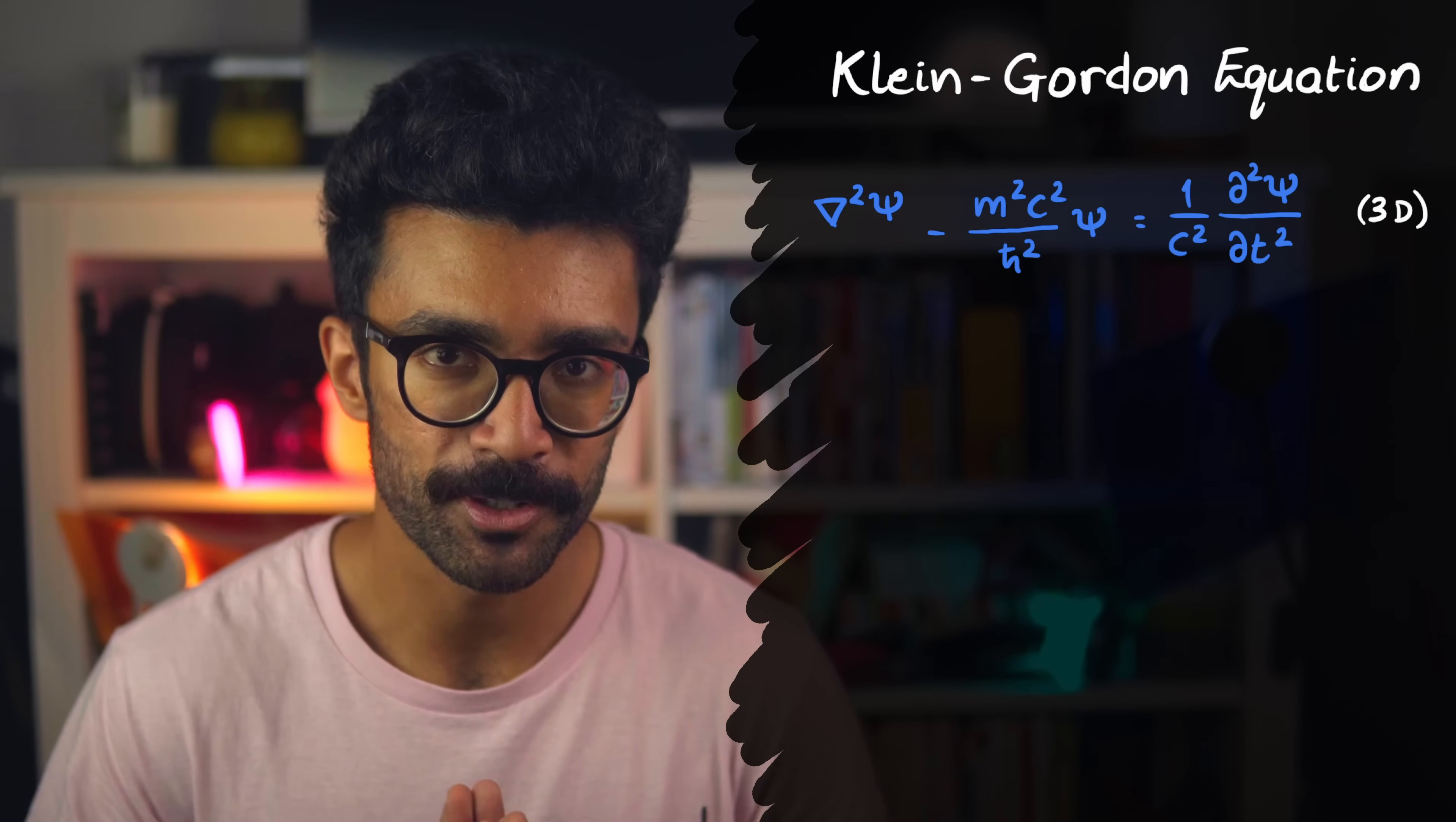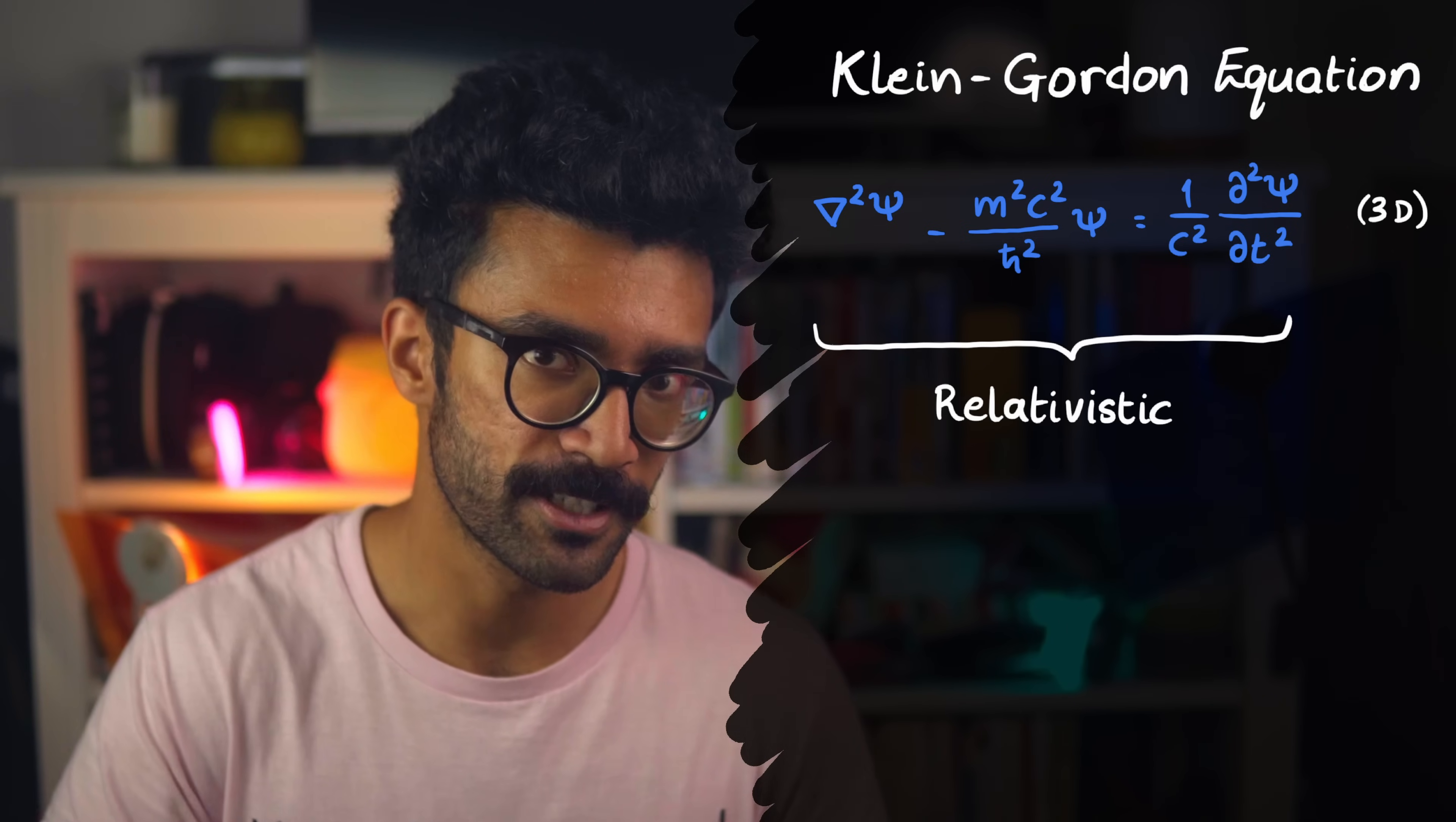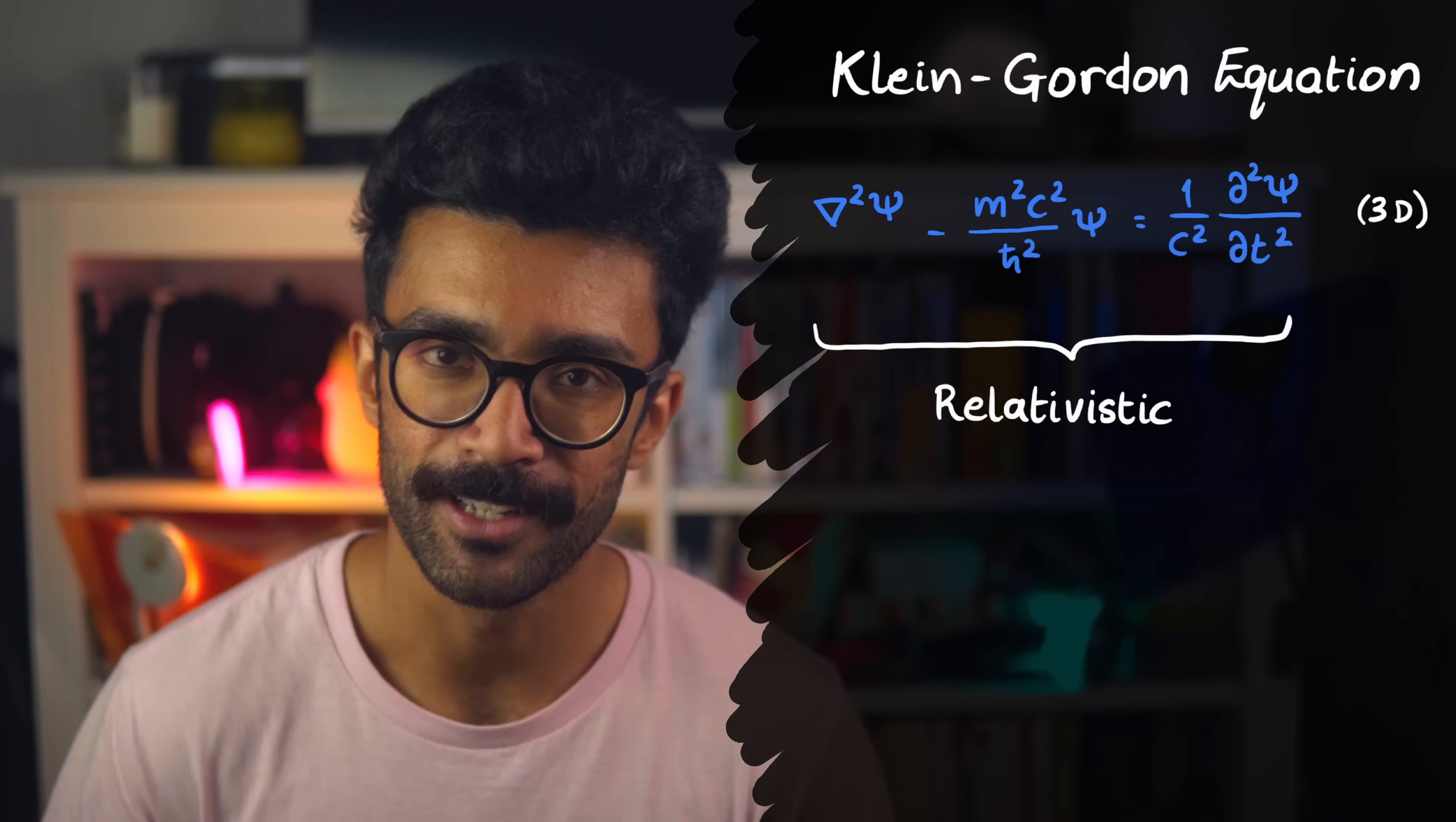Now the interesting thing about the Klein-Gordon equation is that it accounts for particles that behave relativistically. What this means is that any particles moving at high speeds will experience somewhat unintuitive effects that are explained by the theory of relativity. In fact, I recently made a video explaining why the Schrödinger equation failed at dealing with relativity, and why we need to upgrade to the Klein-Gordon and Dirac equations. Check it out up here, also linked in the description.